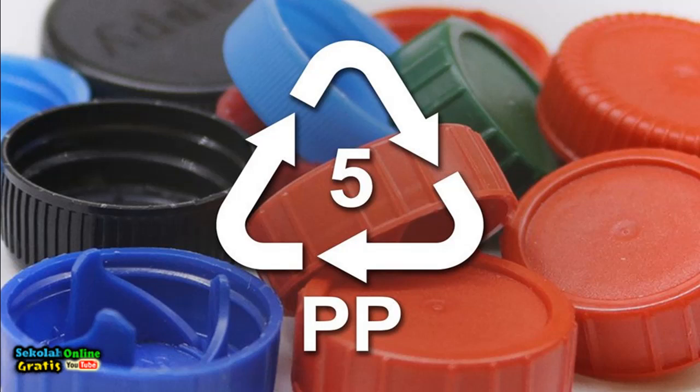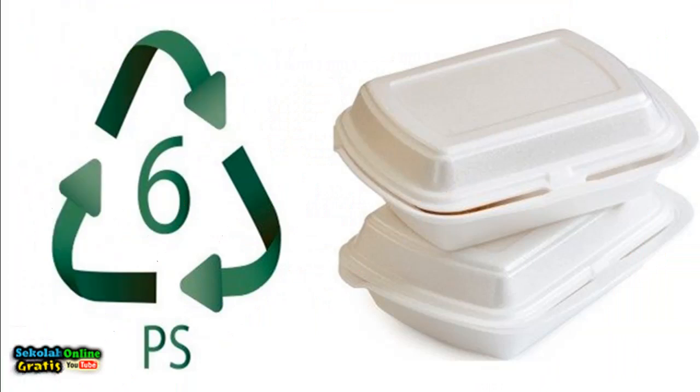Code 6 or PS are polystyrene or styrofoam. Plastic that is cheap, light and easy to shape. PS is widely used in snack food packaging, is easily damaged and brittle. So it can be cut into small pieces and pollute the environment. Styrene compounds in PS can be released and if consumed can trigger cancer in the reproductive organs. So if possible we should avoid using PS for food wrap.